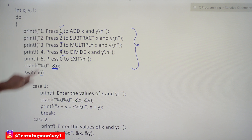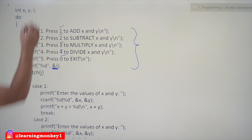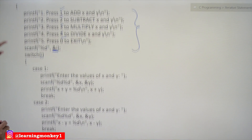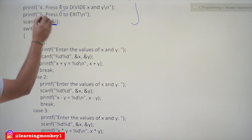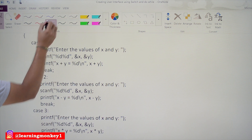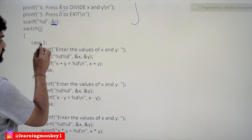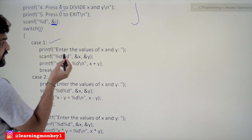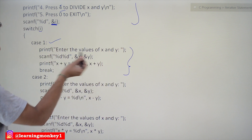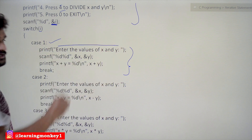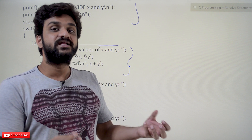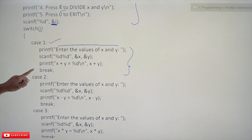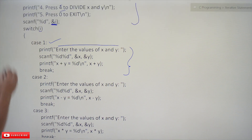Now switch on I: based upon the option, if it is one, case one will get executed; if it is two, case two will get executed. For case zero we have to exit. For example, if the user has given one, we come into case one. The lines executed prompt the user to enter the values of X and Y, the values get added, and the break statement executes, bringing us out of the switch statement.